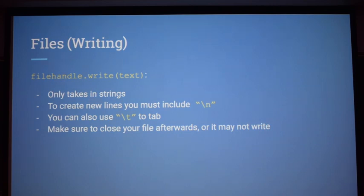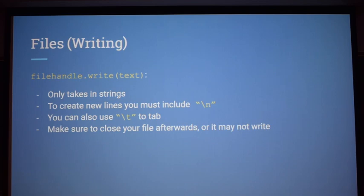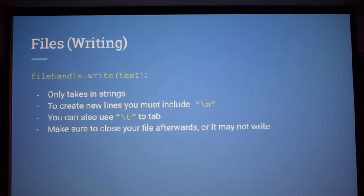For writing, similar to reading — you do file_handle.write() and put the text inside the method. It will write to the file depending on which mode you opened it in. If opened in write mode, it'll overwrite whatever was there; if append mode, it adds to it. You can use '\n' to create new lines and '\t' for tabs. One important thing: make sure to close your files afterwards, otherwise you may not be able to access the file after your program exits.